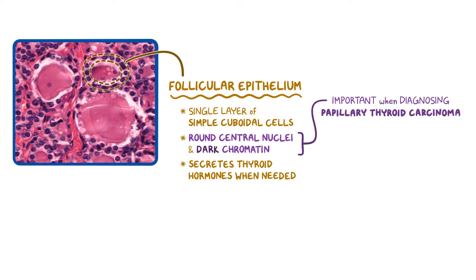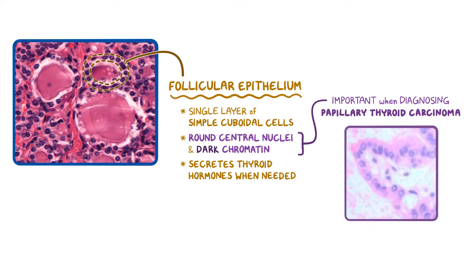In papillary thyroid carcinoma, the nuclei will be large and irregular with light chromatin, similar to this image, which has pale intranuclear inclusions.